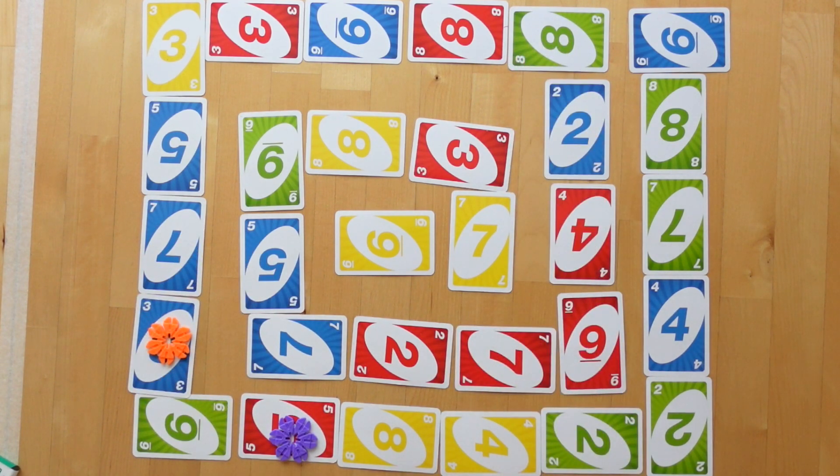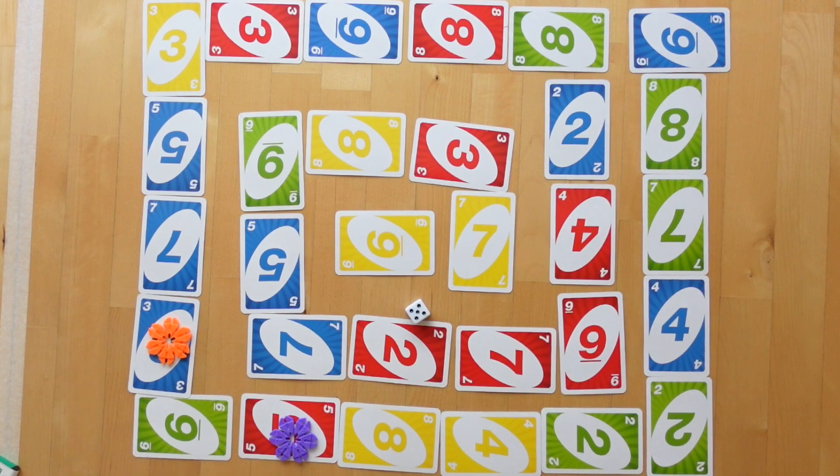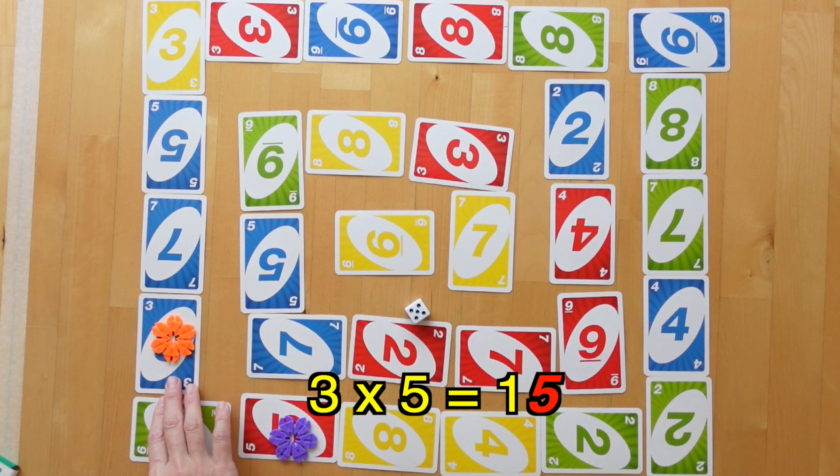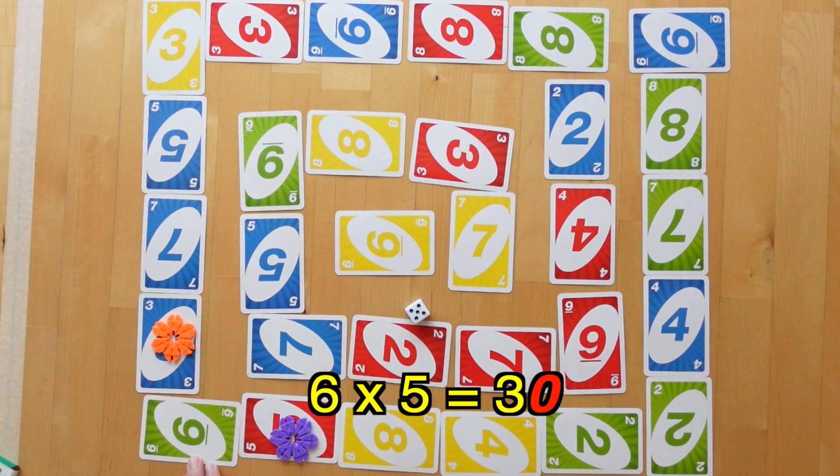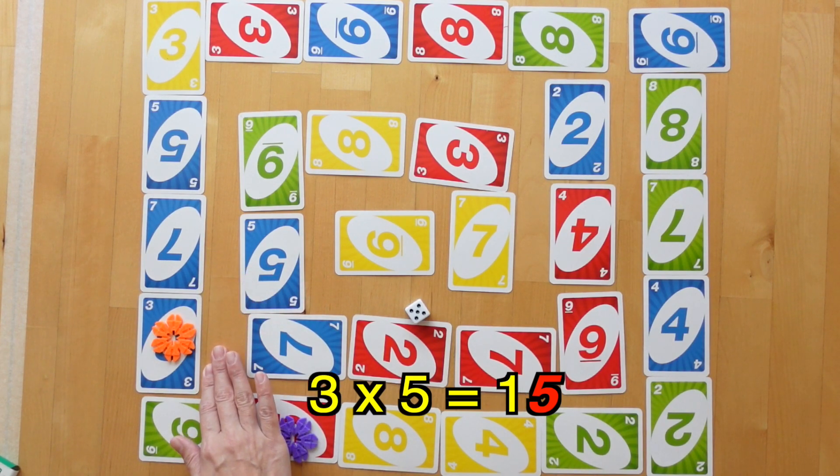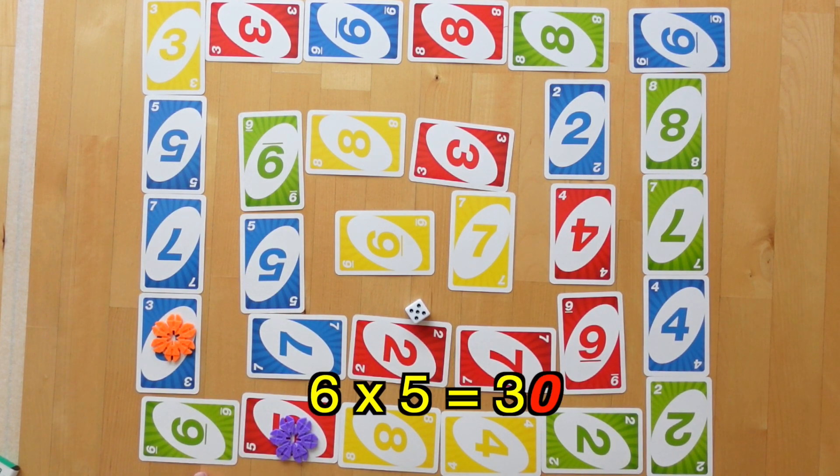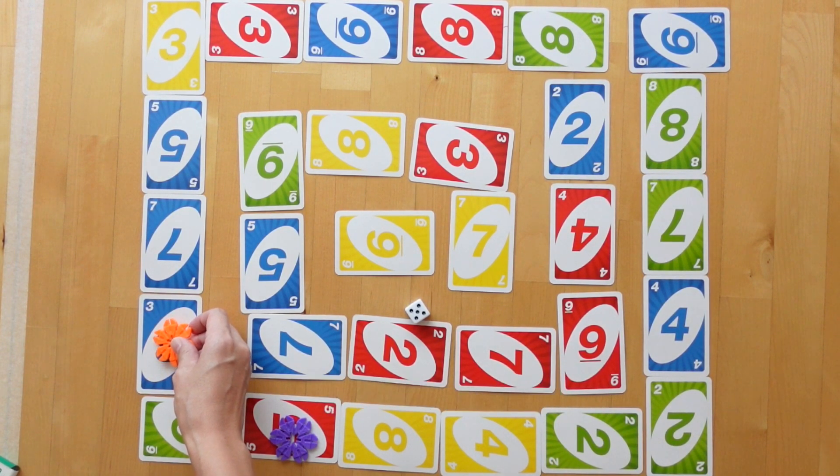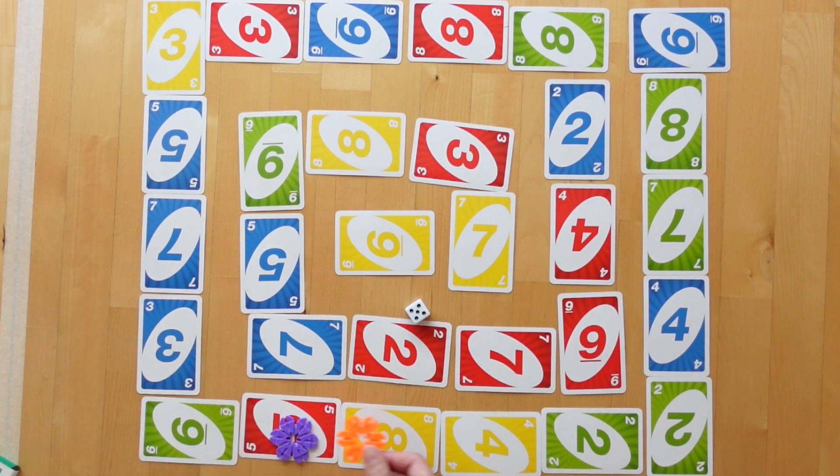Let's go back to orange player. Orange player has rolled a 5. 7 times 5 is 35. 3 times 5 is 15. And 6 times 5 is 30. So she could move 5 from 7, 5 also from 3, or 0 from 6. So she's going to choose 5 times 3, which is 15, and move 5 spaces. 1, 2, 3, 4, 5.